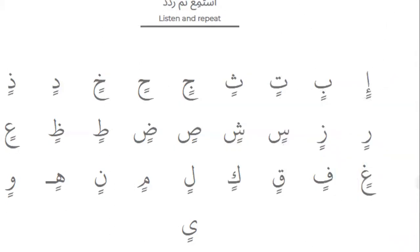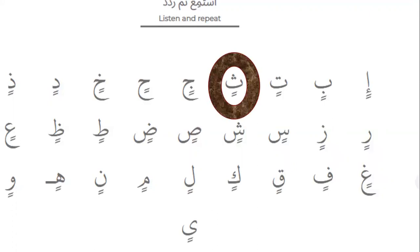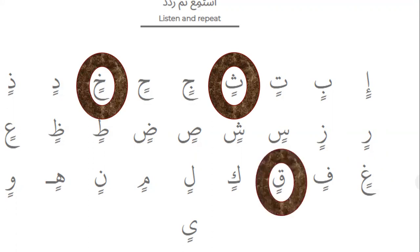Tanwain with Kasrah: the sound of Kasrah is E, but the sound of Tanwain with Kasrah ends with the sound of Noon Sakinah — In. For example: Msin becomes Msin, and Kha with Tanwain Kasrah becomes Khin.